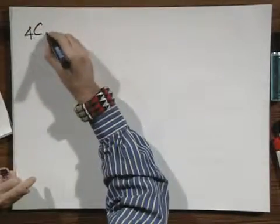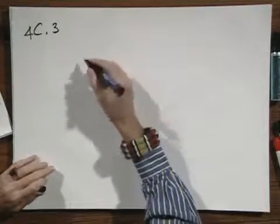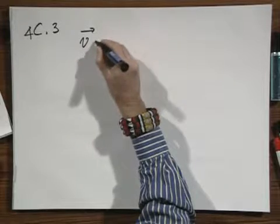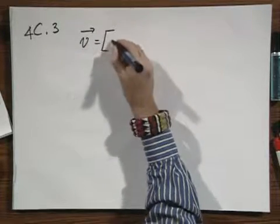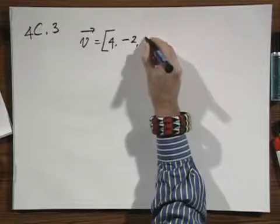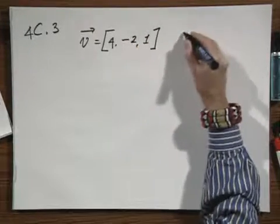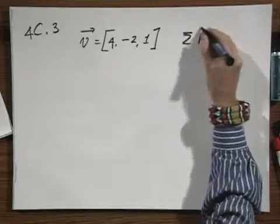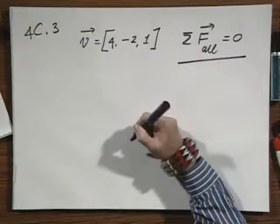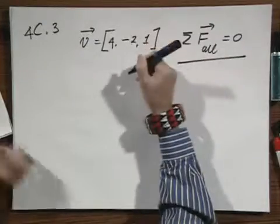4C.3: We have a particle that moves with a constant velocity. Keep that in mind - a constant velocity, and the velocity vector equals 4, minus 2, 1. If it has a constant velocity, then the sum of all forces must be zero. That is non-negotiable. If it were not zero, the velocity would change.